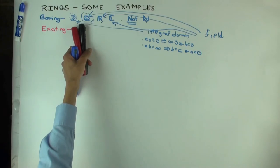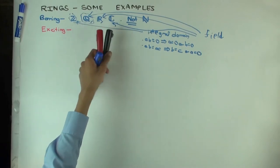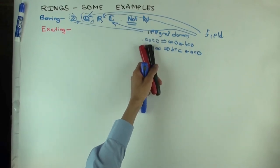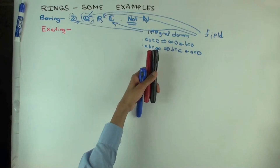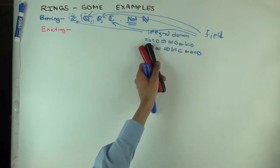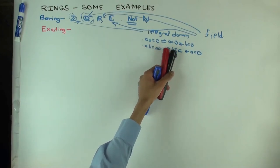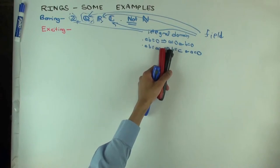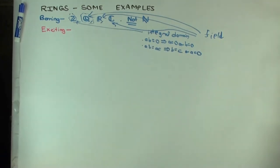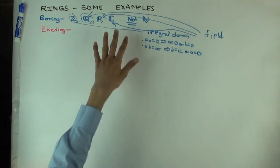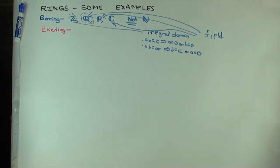Any subring of an integral domain will still be an integral domain. If you have a ring which is an integral domain and you take a subring of that, it will still remain an integral domain. Because the condition — whenever a product of two things is zero, then one of them is zero — if that's true in the whole ring, it will still be true in a subring. So if you want to construct examples of things that are not integral domains, you cannot look inside these, because any subring of these is going to be an integral domain.